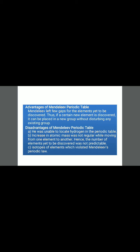So, why was it discarded? Number 1: he was unable to locate hydrogen in the periodic table. Number 2: the increase in atomic mass was not regular while moving from one element to another. Number 3: isotopes of elements violated Mendeleev's periodic law. So, it was about the history of the discovery of elements and their arrangement in a regular, systematic way.